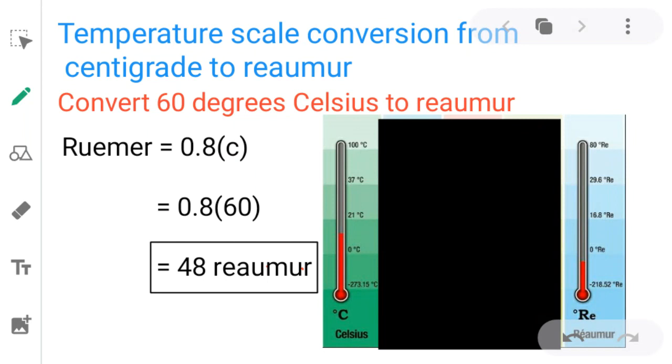Let's take a simple problem: 60 degree Celsius to Réaumur. We have to convert 60 degree Celsius or 60 degree centigrade to Réaumur. Why should we convert? Because the scales are different in different systems.